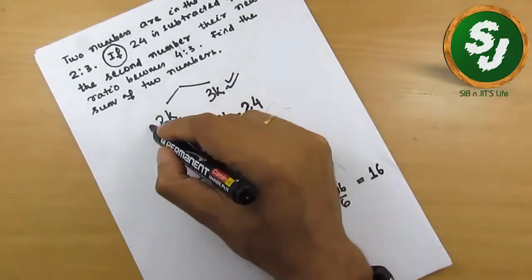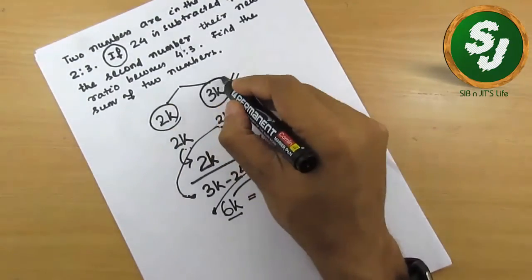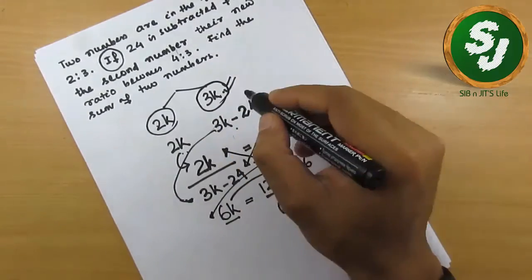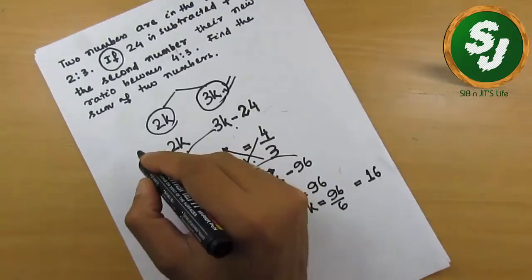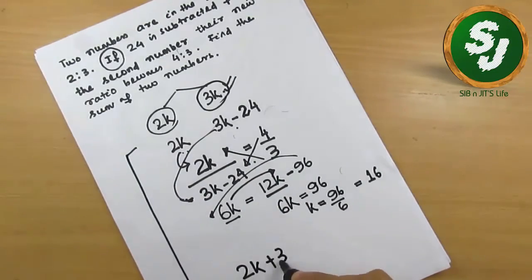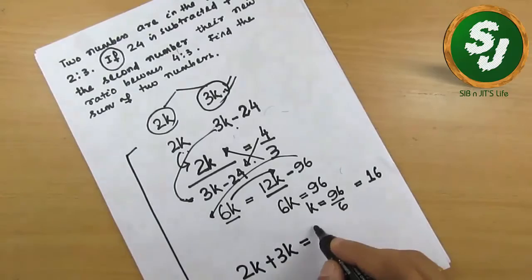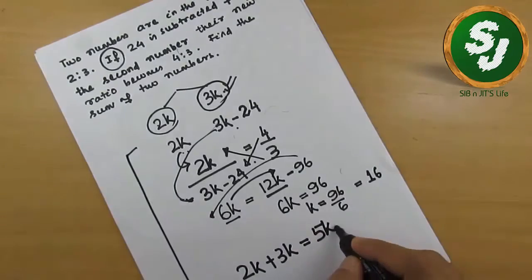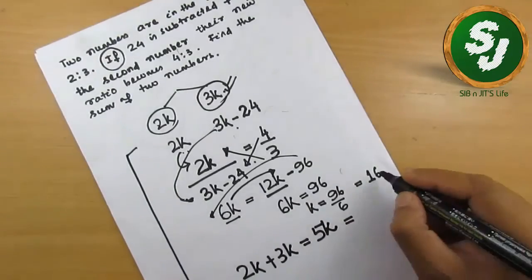the two numbers? The two numbers were 2k and 3k. So the sum of these two numbers is 2k plus 3k.